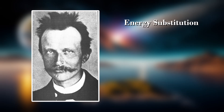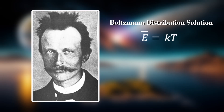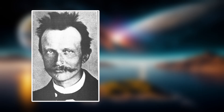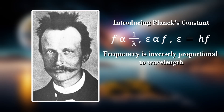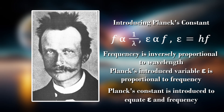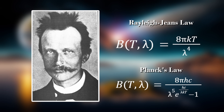He also changed the energy variable E into n times epsilon, where n represents the amount of energy packets and epsilon represents the energy of a packet. As minor as these changes were, they made monumental changes to the derivation. After Planck derived his formula in terms of n and epsilon, he noticed something special: the frequency, or the inverse of the wavelength of light emitted, was proportional to his newly introduced value epsilon. So Planck replaced epsilon with frequency, or f, in his equation. To keep f and epsilon equivalent, he introduced a new constant, h, to multiply the frequency by. This constant would go on to become known as Planck's constant and would turn out to be one of the most important fundamental constants of our universe.